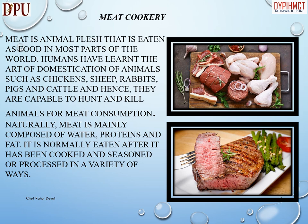Meat is animal flesh that is eaten as food in most parts of the world. Humans have learned the art of domestication of animals such as chickens, sheep, rabbits, pigs and cattle, and hence they are capable to hunt and kill animals for meat consumption. Naturally, meat is mainly composed of water, proteins and fat. It is normally eaten after it has been cooked and seasoned or processed in a variety of ways.